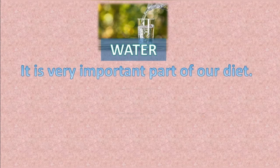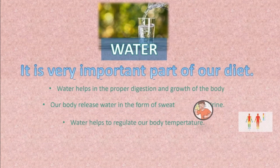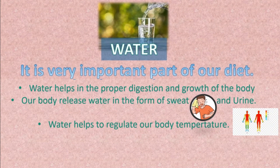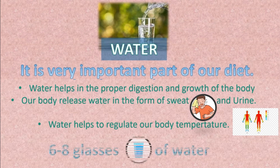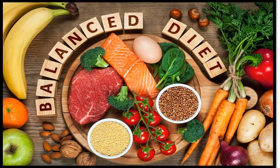Water is a very important part of our diet. Water helps in the proper digestion and growth of the body. Our body releases water in the form of sweat and urine. Water also helps to regulate our body temperature, and we must drink at least six to eight glasses of water every day.